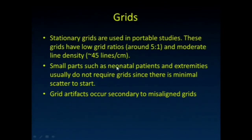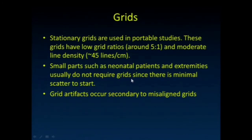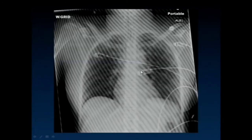For portable studies, stationary grids are used, and they have lower grid ratios and moderate line density. Sometimes you can see the grid pattern on portable studies if they're not placed very well. We already mentioned that small parts and neonatal patients don't require grids because there's minimal scatter to start with — we certainly don't want to put a grid in there because it will increase dose when we didn't need the grid in the first place. And here's one of those misaligned grids that you'll see sometimes — this one's really prominent.